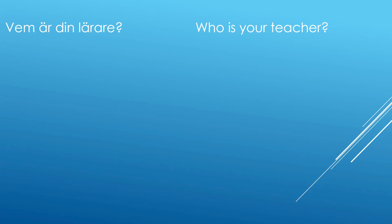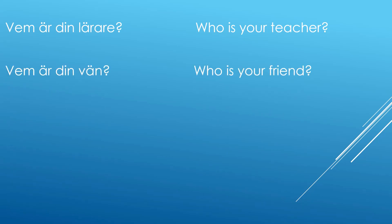'Vem är din lärare?' means 'who is your teacher?' Whenever you see words like 'du', 'din', or 'ditt', all of these point to the second person — the person you are talking to. 'Du' is 'you', and 'din' or 'ditt' can be used in place of 'your'. We will see those in detail in another video. Another example: 'Vem är din vän?' means 'who is your friend?'